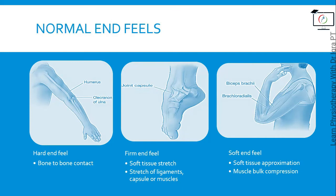Firm end feel, also known as soft tissue stretch end feel, occurs because of soft tissue structures surrounding the joint being stretched to limit the range of motion. The stretch can be of ligament, joint capsule, or muscles — for example, flexion at the MCP joints of the foot limited by joint capsule stretch. Soft end feel, also known as soft tissue approximation, occurs because of muscle bulk compression — as in elbow flexion, where the biceps brachii and brachioradialis get approximated and limit elbow flexion.